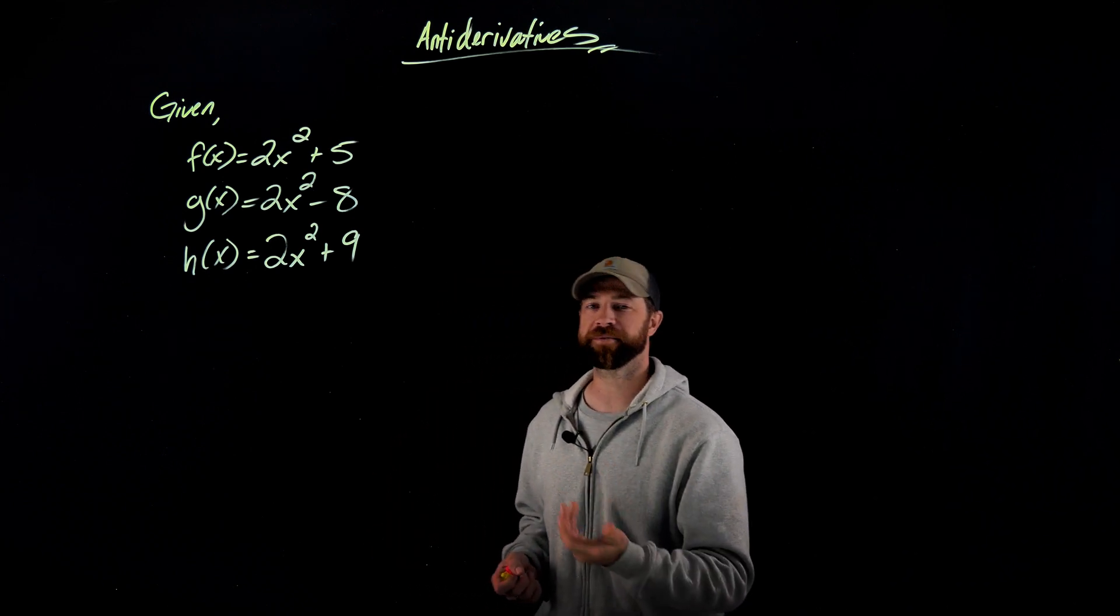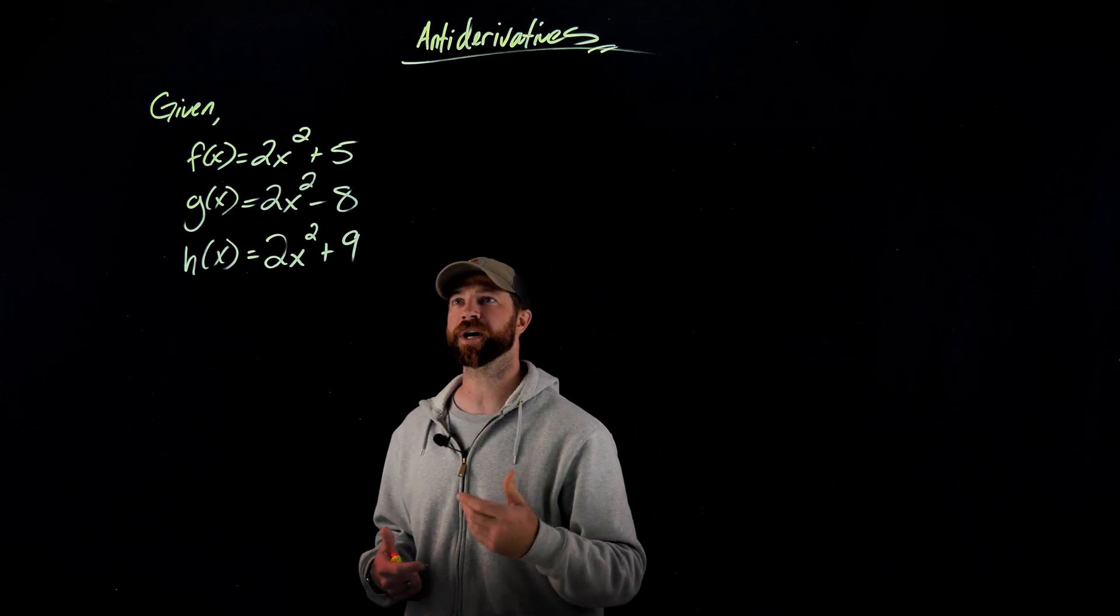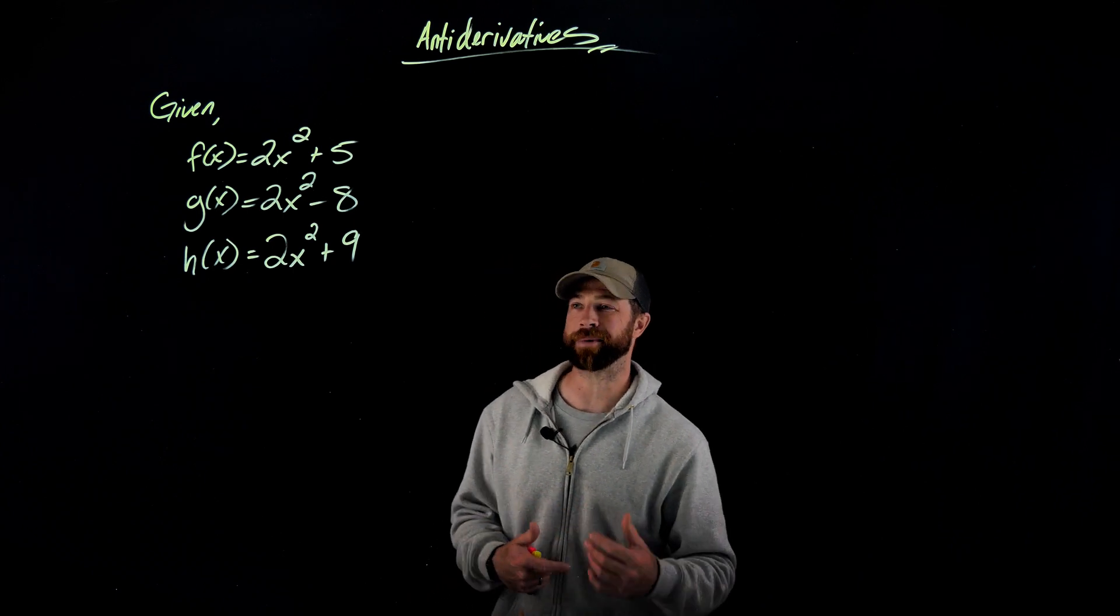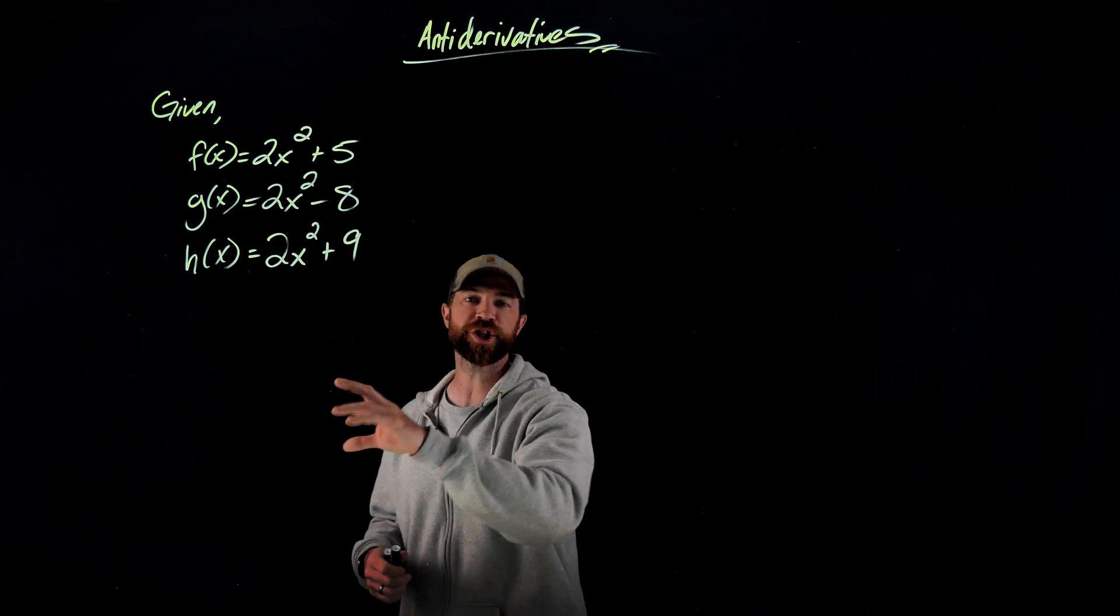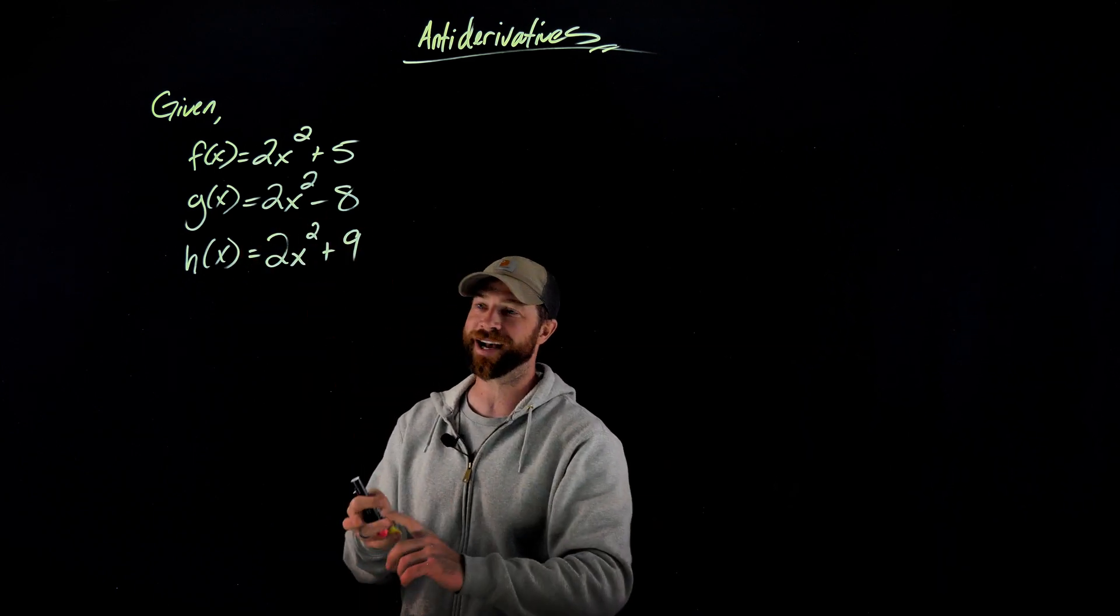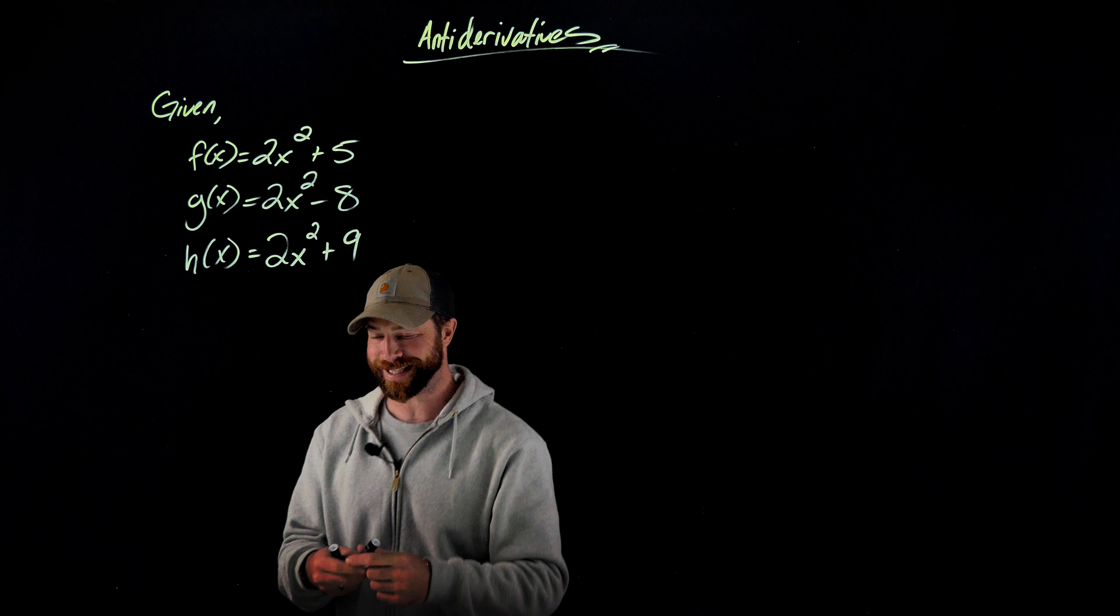In this case right here, I have three different functions: f(x) = 2x² + 5, g(x) = 2x² - 8, and h(x) = 2x² + 9. The important thing here is that if I differentiated each of these, I would all get the same thing.